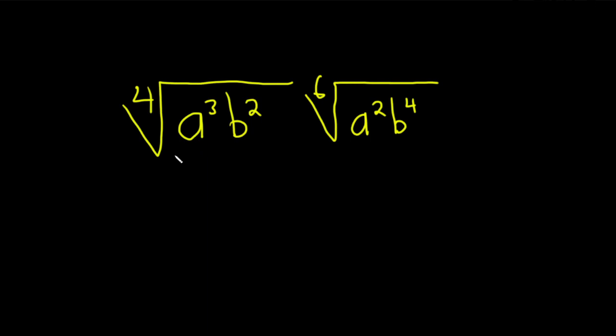We'll start by writing each of these as something to a rational exponent. So this here is to the first power and this here is to the first power. So step one is going to be to write it as follows. This is a cubed b squared parentheses and then it's this number over this number, so 1 over 4. And then a squared b to the fourth, so a squared b to the fourth, and it's this number over this number, so 1 over 6.